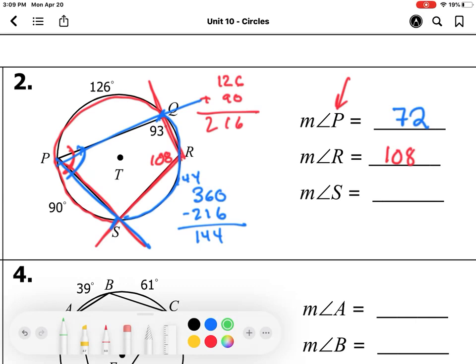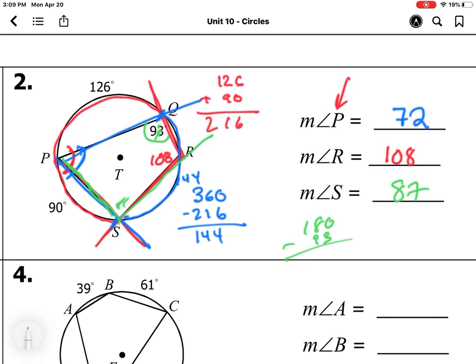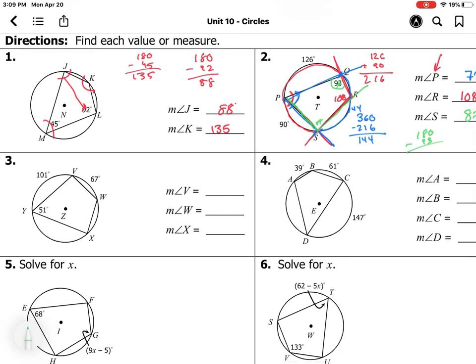Finally, we're looking for angle S right here. Well, we know that this is 93. We know that they add up to equal 180. So 180 minus 93 gives us 87. So we use what we know about inscribed angles to help solve for missing angles of the quadrilateral. You're going to do the same thing in that example.